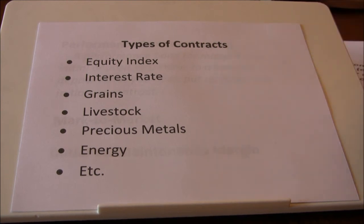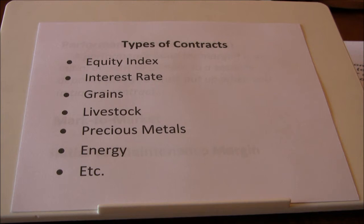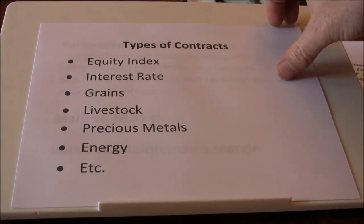That underlying asset may not be a physical asset but a structured one. For instance, in the weather contracts, the delivery or value of the contract is based on things like heating degree days or cooling degree days. There's not an actual asset there, but instead a way to calculate the value of the futures contract at expiration.